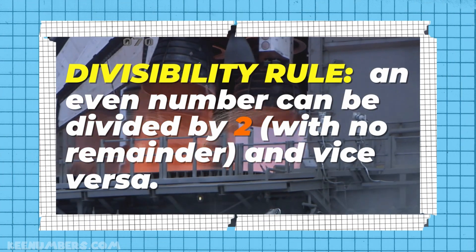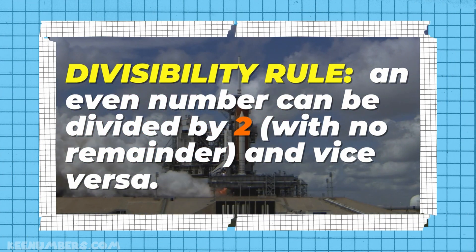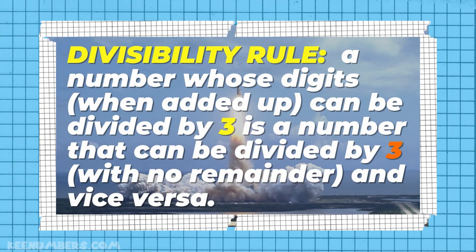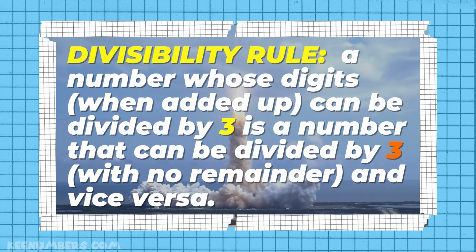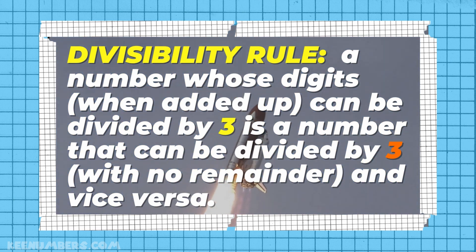Divisibility rule. A number that is even can be divided by 2 with no remainder and vice versa. When you take all the digits that make up a number and add them together, if what you get is a multiple of 3, the original number can be divided by 3 with no remainder and vice versa.